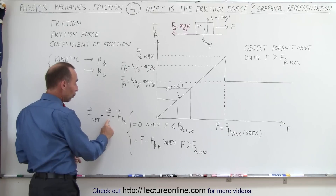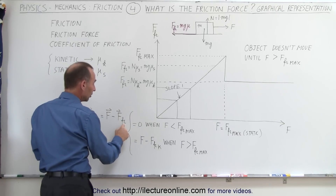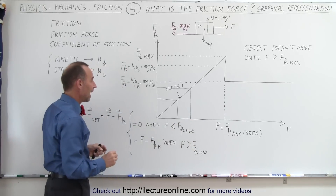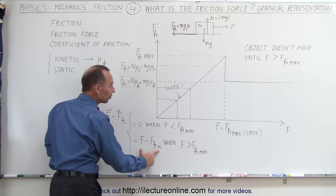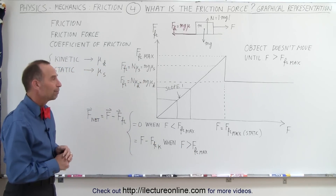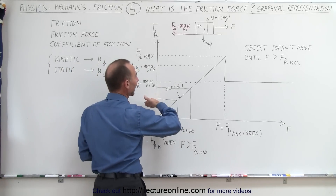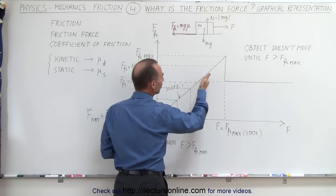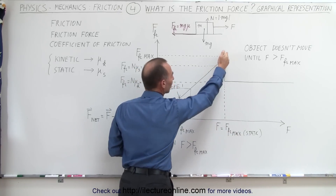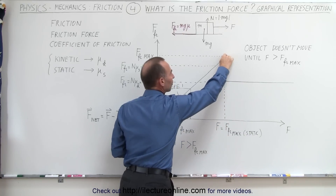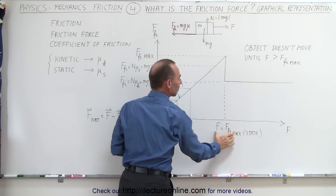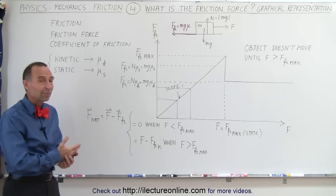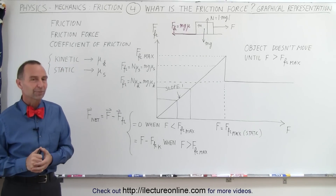The net force is going to be the difference between the force by which you pull on the object minus the friction force pulling in the opposite direction. It equals zero when the pulling force is smaller than the maximum friction force, and it's greater than zero — equal to the difference between the two forces — when the pulling force exceeds the maximum friction force. That's the key difference between static and kinetic friction. The static friction force equals the pulling force as it increases, until it reaches the maximum; then the object begins to move, the coefficient drops, and the object accelerates. Hopefully that clarifies the concept of friction force and the differences between static and kinetic friction forces.